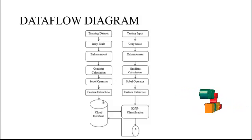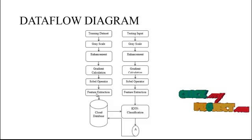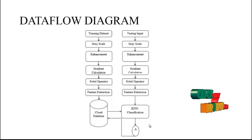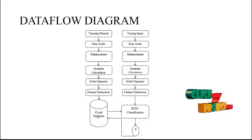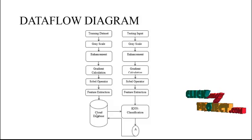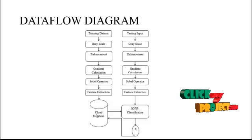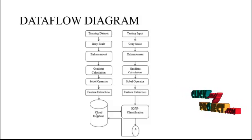After that, the feature extraction method measures the related values. Then, a cloud-based data server is used to enable communication between multiple users. If a user uploads a certain leaf image, it will automatically be stored in the cloud database.